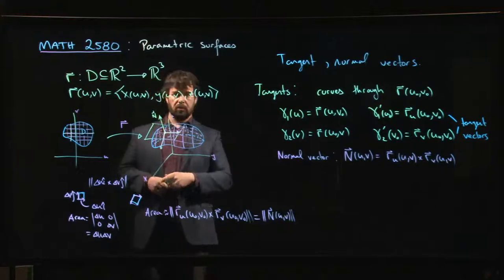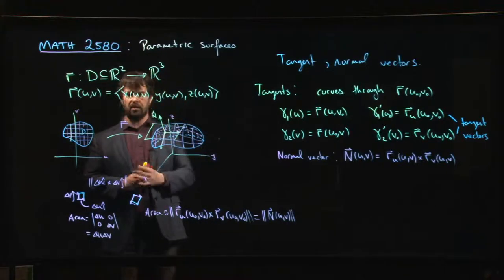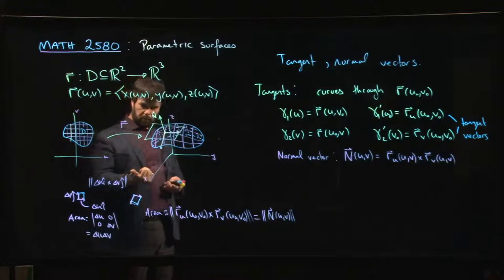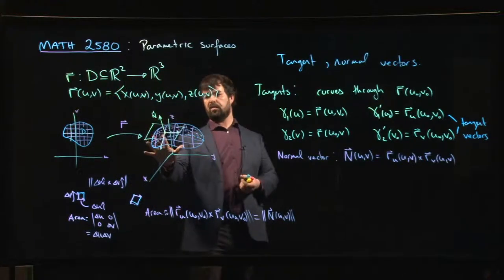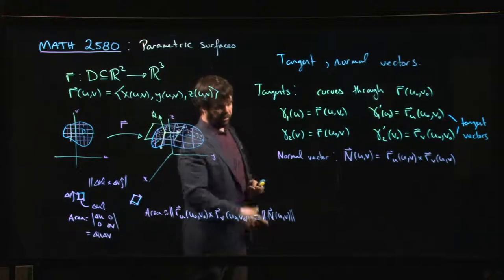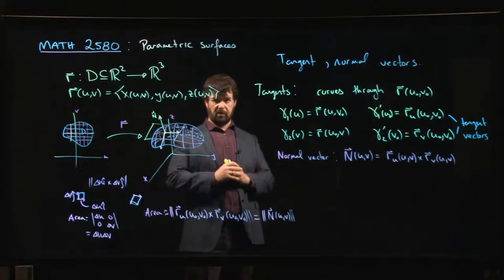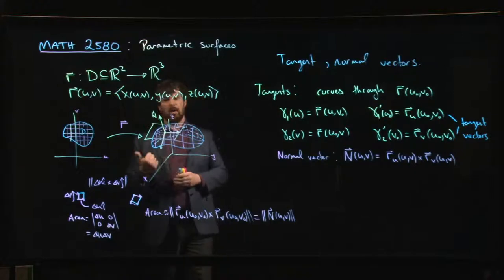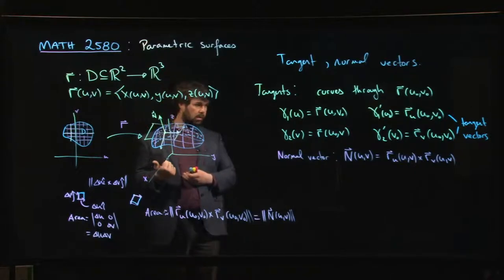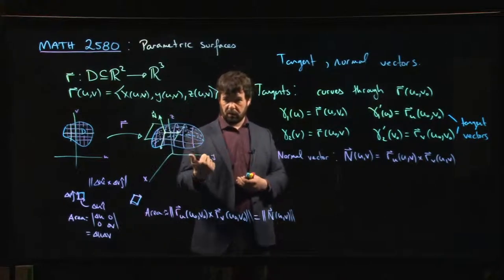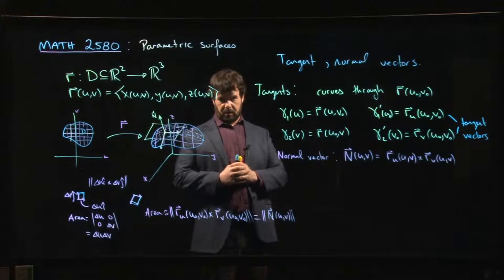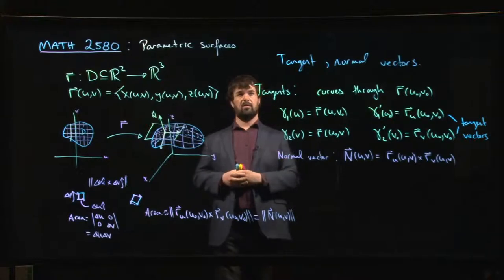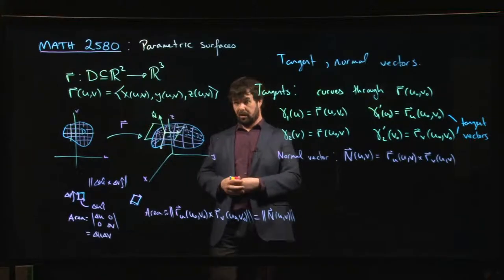One of the other conditions you might impose on your surface, in addition to it being C1 and one-to-one, is to ask for a non-vanishing normal vector — the same way you ask for a non-vanishing tangent vector on a curve. Every curve can be oriented: you just choose a direction of travel, so you can insist on having a non-vanishing tangent vector for a smooth curve.